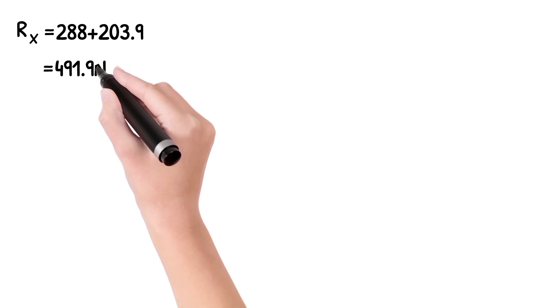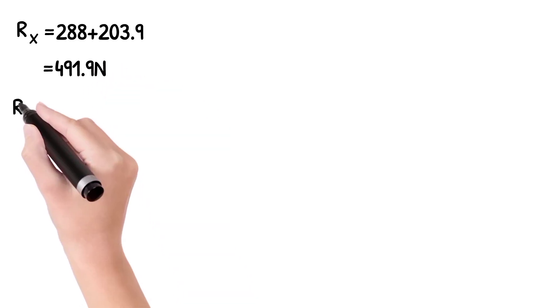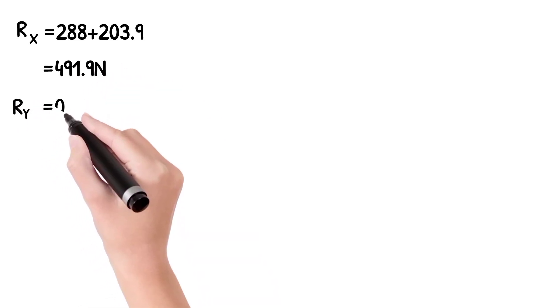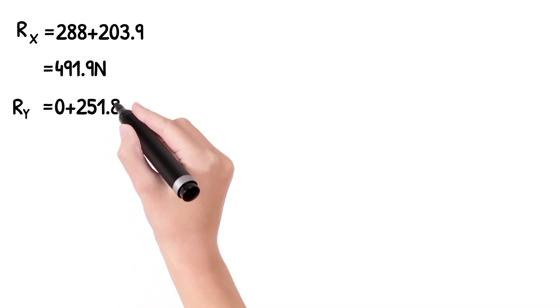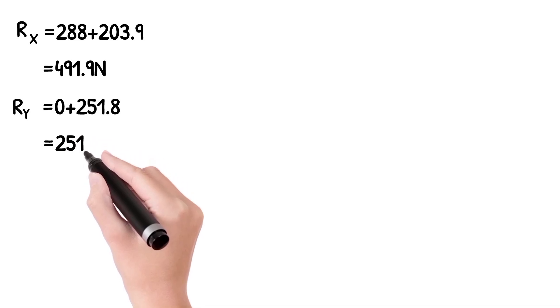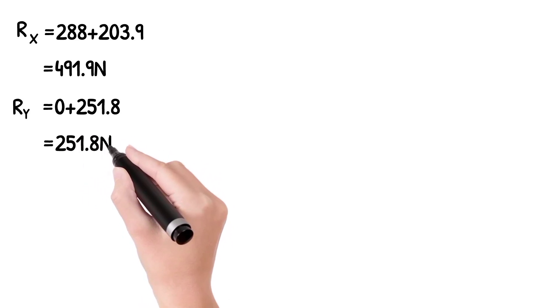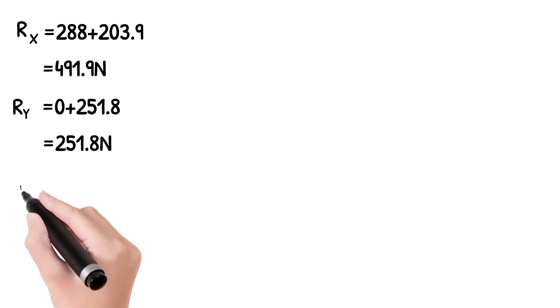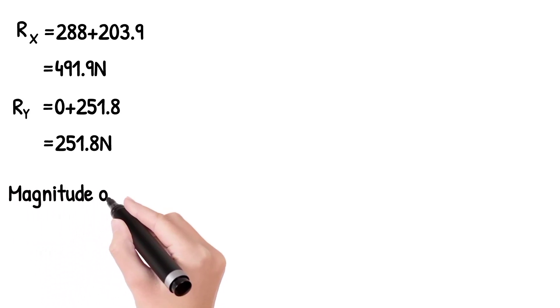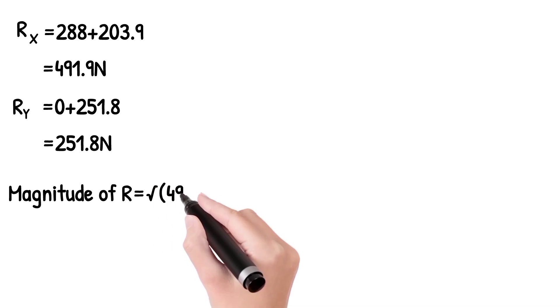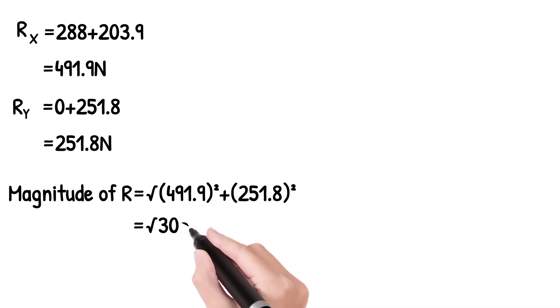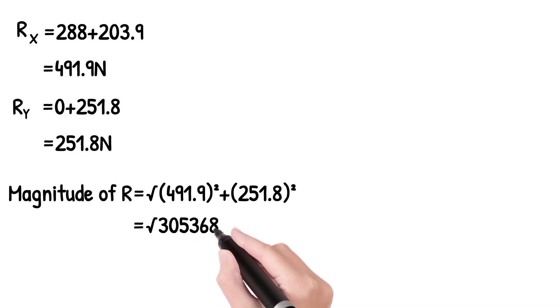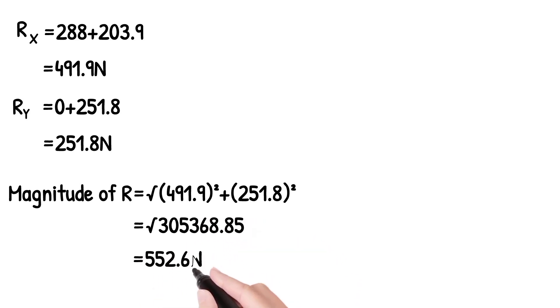The answer for Rx is 480.9. I will substitute 0 plus 251.8 for Ry, giving 271.8. This is the resultant vector. R is equal to the root of 480.9 squared plus 271.9 squared. The answer is approximately 552.6 newtons.